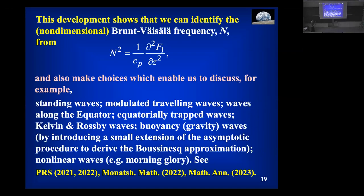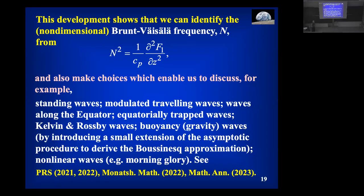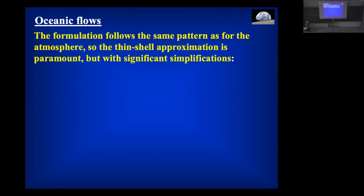We can get Kelvin waves, Rossby waves, buoyancy gravity waves, and others — I've only given you a sample. Making suitable steady and unsteady choices recovers all the usual classical results in the atmosphere.